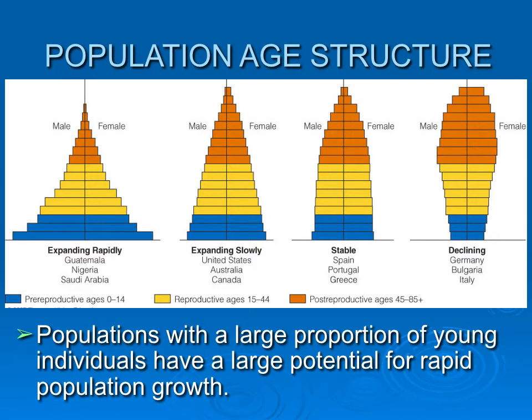Age structures are important. They are the proportion of individuals of specific ages. In some populations, there'll be very few old individuals and lots and lots of young individuals. That's the expanding rapidly population shown on one side — these are human populations. When you have lots of young individuals, you know there's going to be future population growth.